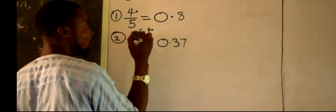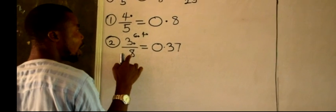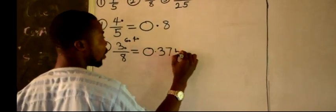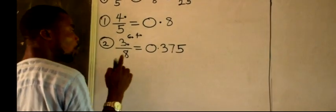I said every remainder you get, you will add a 0 to it. You add a 0 to it. 8 in 40, it will go 5 times. No remainder.